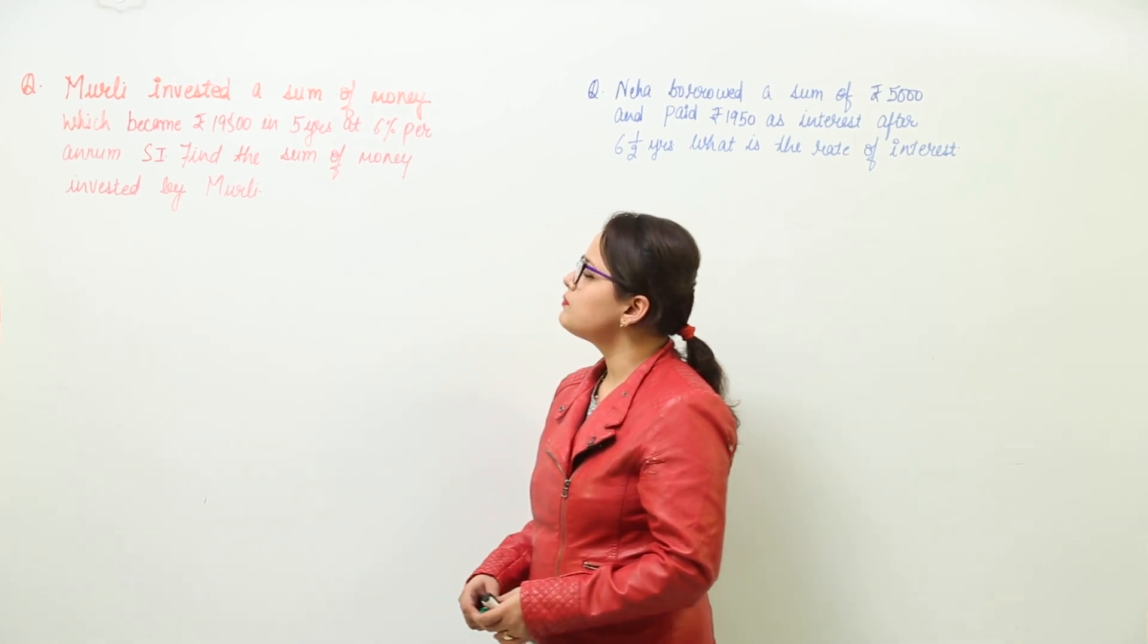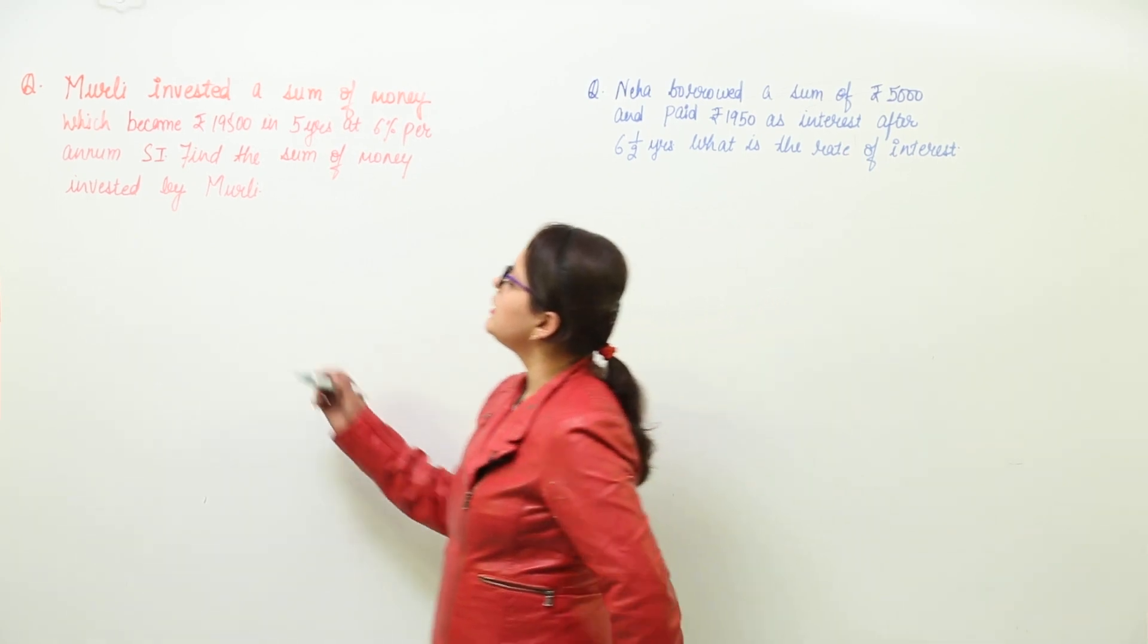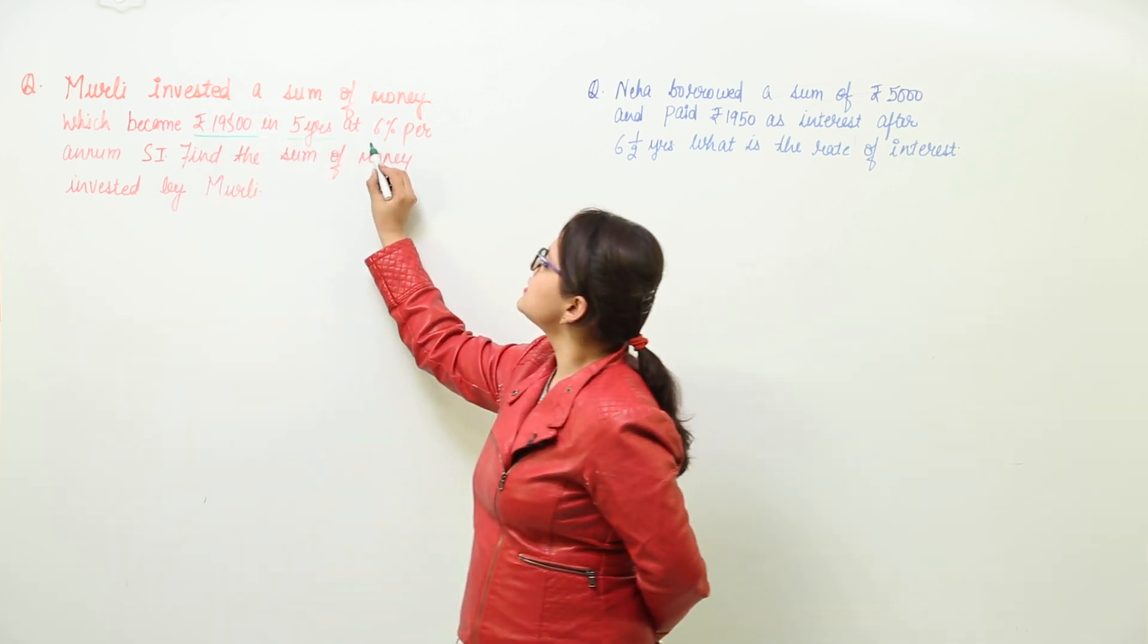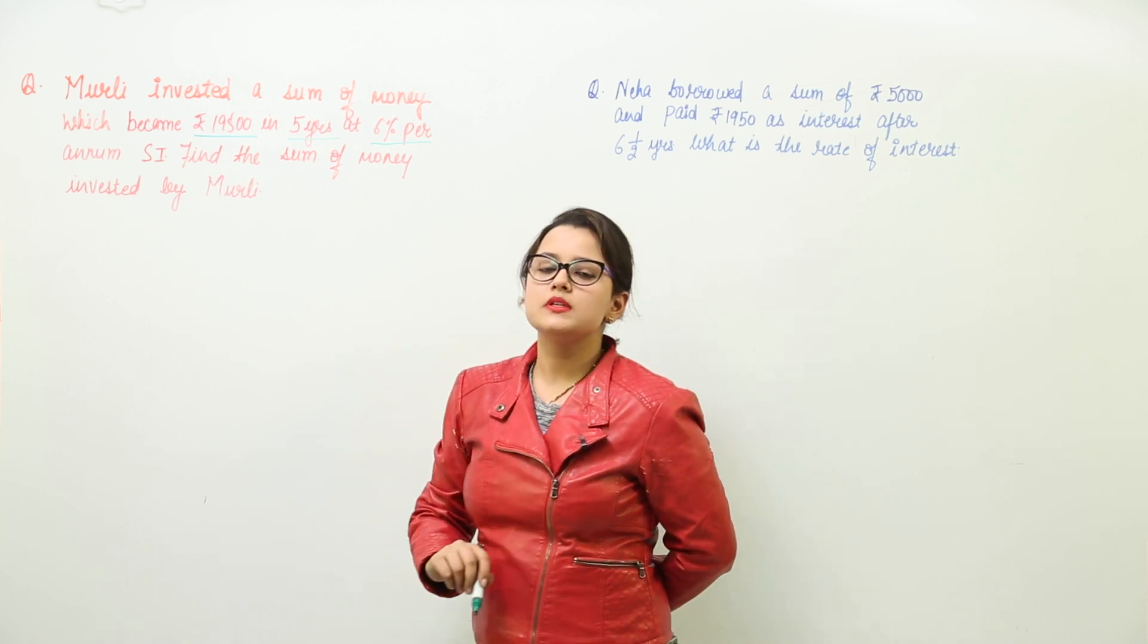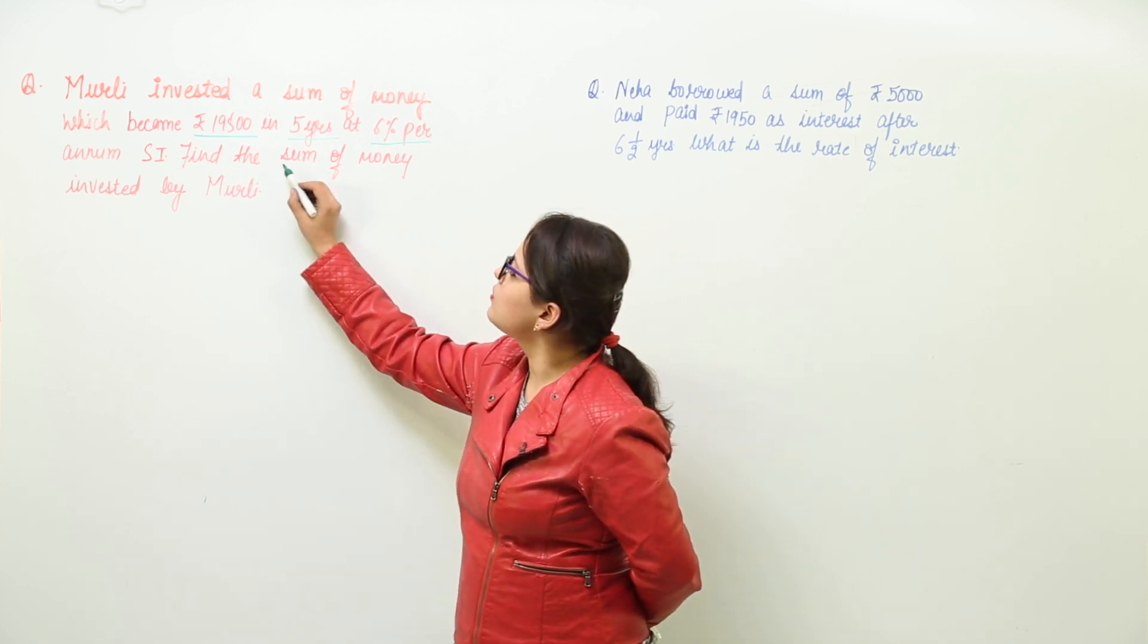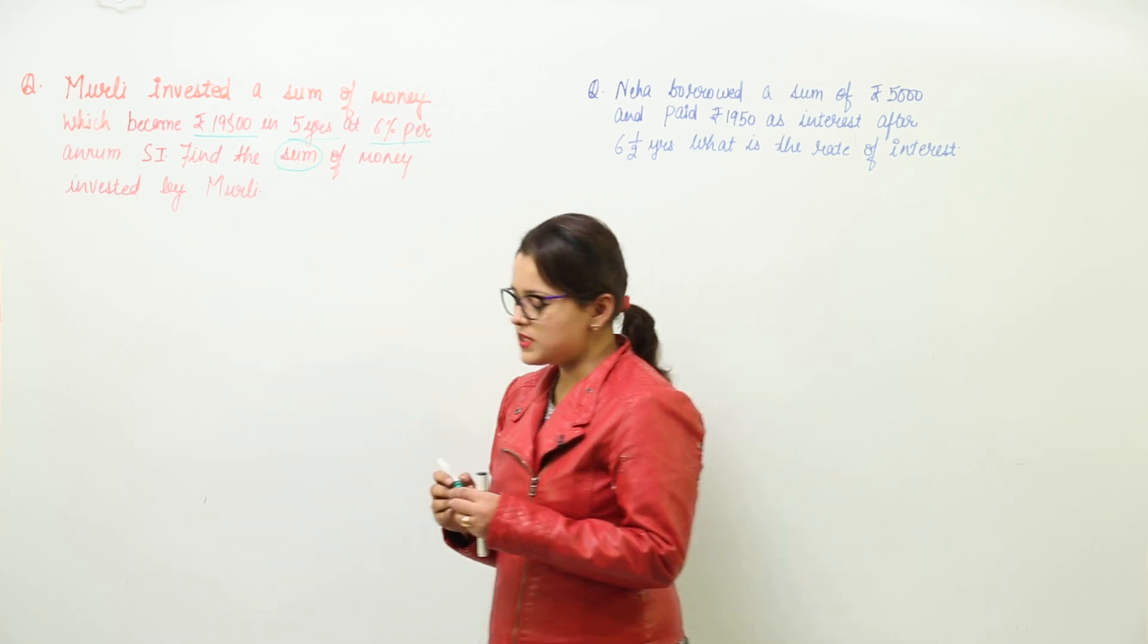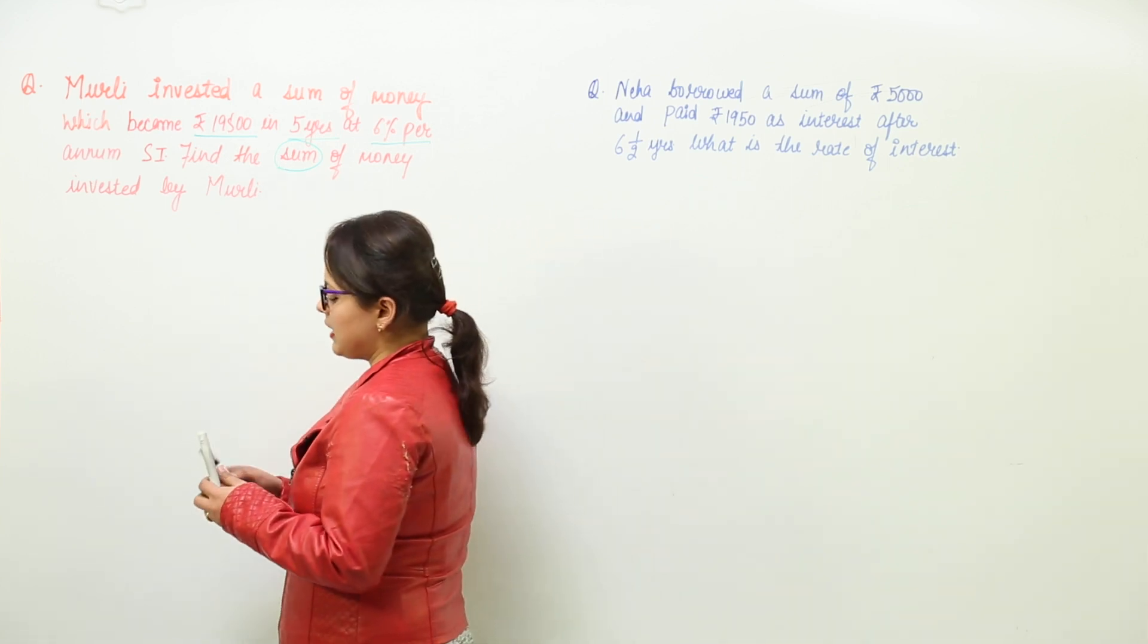Murali invested a sum of money which became 19,500 rupees in 5 years at 6% per annum simple interest. We have to find out the sum of money invested by Murali. Now first write down whatever values are given.